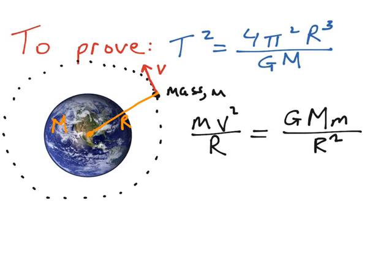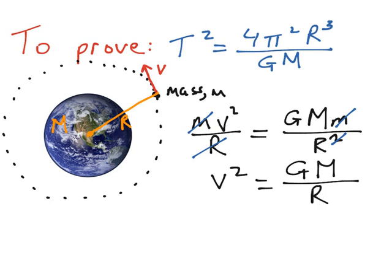If we look at the two equations set equal to each other, we can see some common factors on both sides. Both have the mass of the satellite, which we can cancel off. Looking at the radii, the radius on the left-hand side cancels with one of the radii on the right-hand side, leaving just one radius on the right. That gives us the formula: v squared equals the universal gravity constant multiplied by the mass of the Earth, divided by the radius of the orbit.